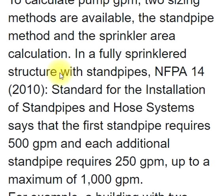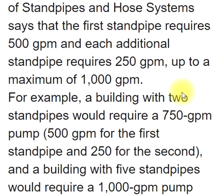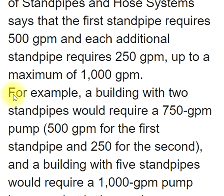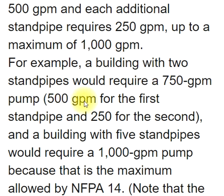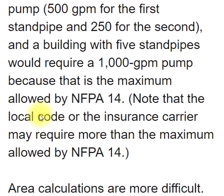In a fully sprinklered structure with standpipes, NFPA 14 (2010 standard for the installation of standpipes and hose systems) states that the first standpipe requires 500 GPM and each additional standpipe requires 250 GPM, up to a maximum of 1,000 GPM. For example, a building with two standpipes would require a 750 GPM pump (500 GPM for the first standpipe and 250 for the second), while a building with five standpipes would require a 1,000 GPM pump — the maximum allowed by NFPA 14. Note that the local code or insurance carrier may require more than this maximum.